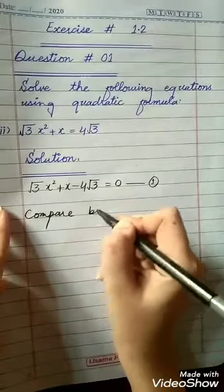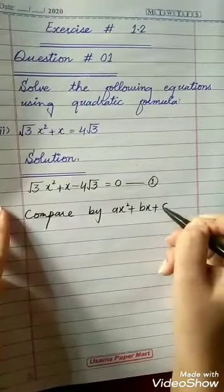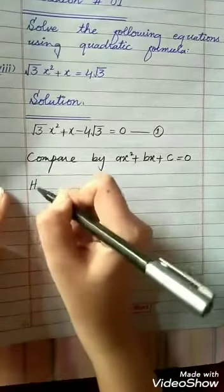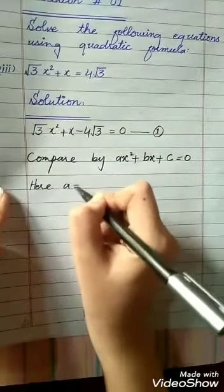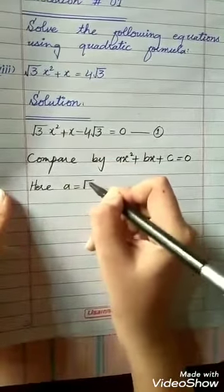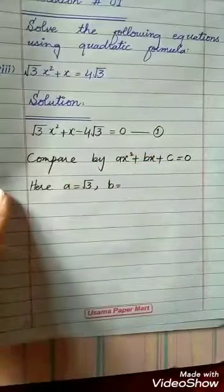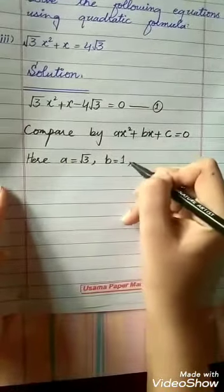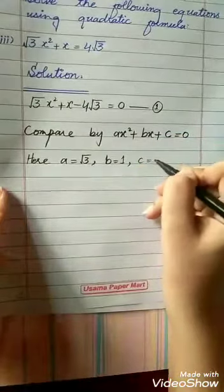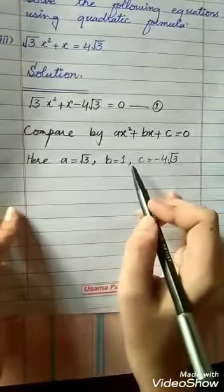This is our first equation. Now we will compare it with the standard form of quadratic equation, which is ax² + bx + c = 0. So here, a is equal to √3, b is equal to 1 (there is no coefficient with x), and c is equal to −4√3. These are the a, b, and c values we have found.